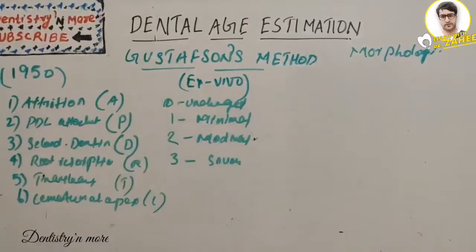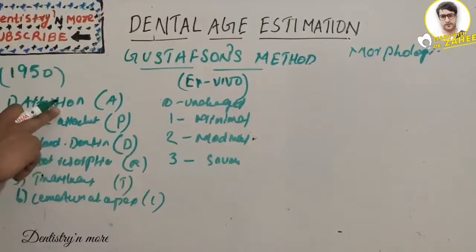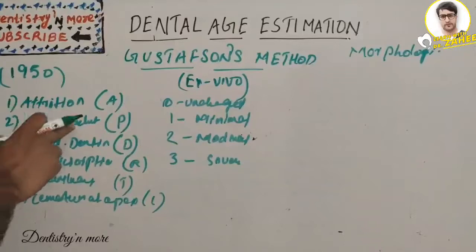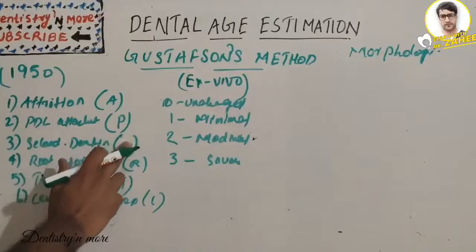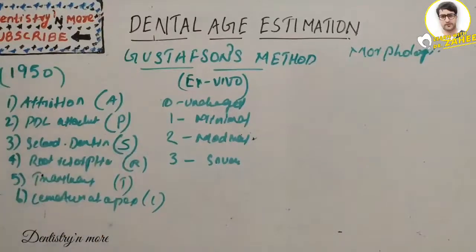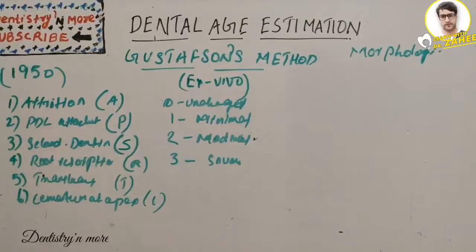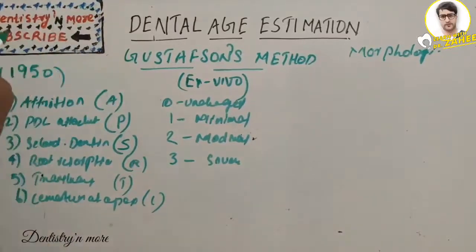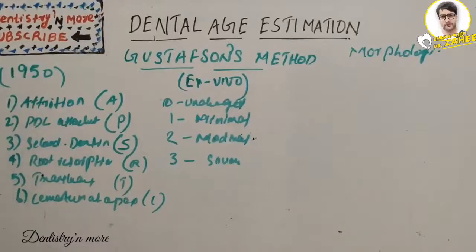The six criteria are: first, the amount of occlusal attrition (denoted A); second, the loss of periodontal attachment (denoted P); third, the coronal secondary dentine deposition (denoted S); fourth, the root resorption at the apex (denoted R); fifth, the dentine translucency (denoted T); and sixth, the cementum apposition at the root apex.